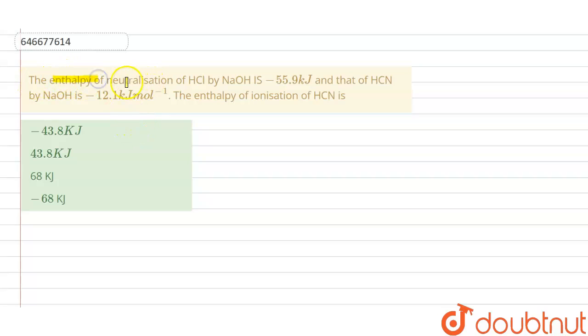The enthalpy of neutralization of HCl and NaOH is given as minus 55.9 kilojoules, and that of HCN and NaOH is given as minus 12.1 kilojoules per mole. The enthalpy of ionization of HCN is...